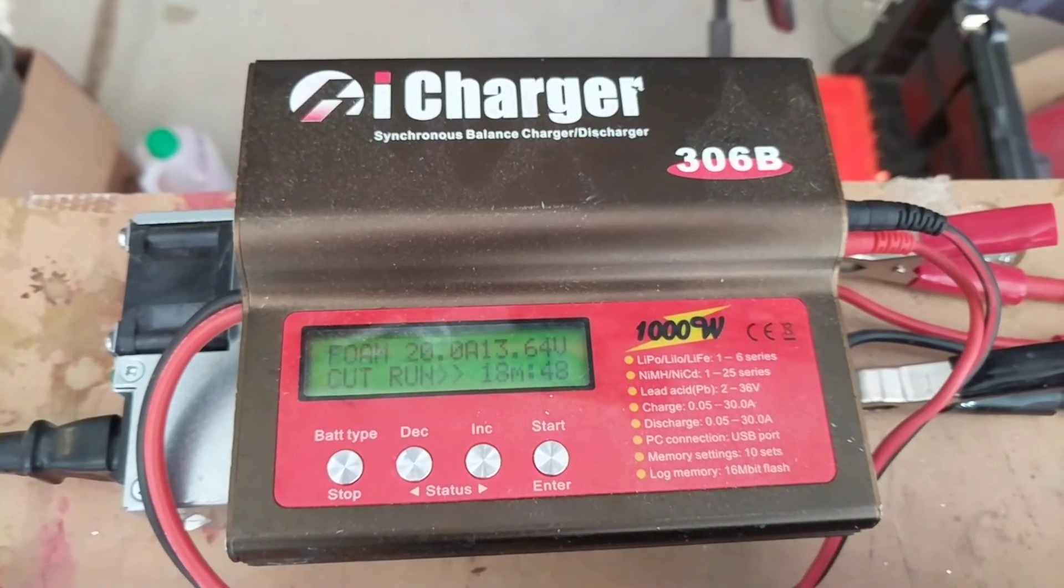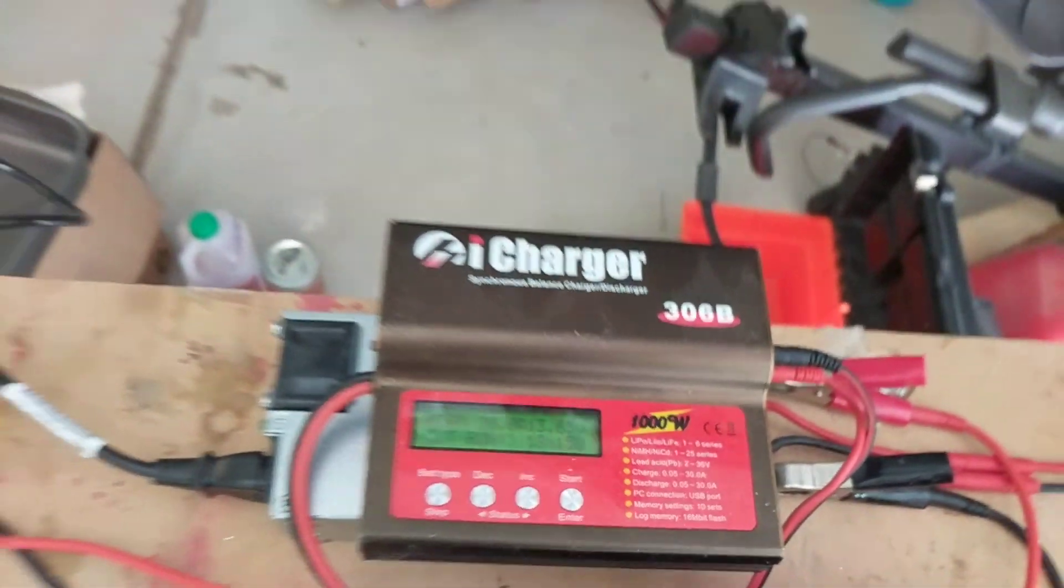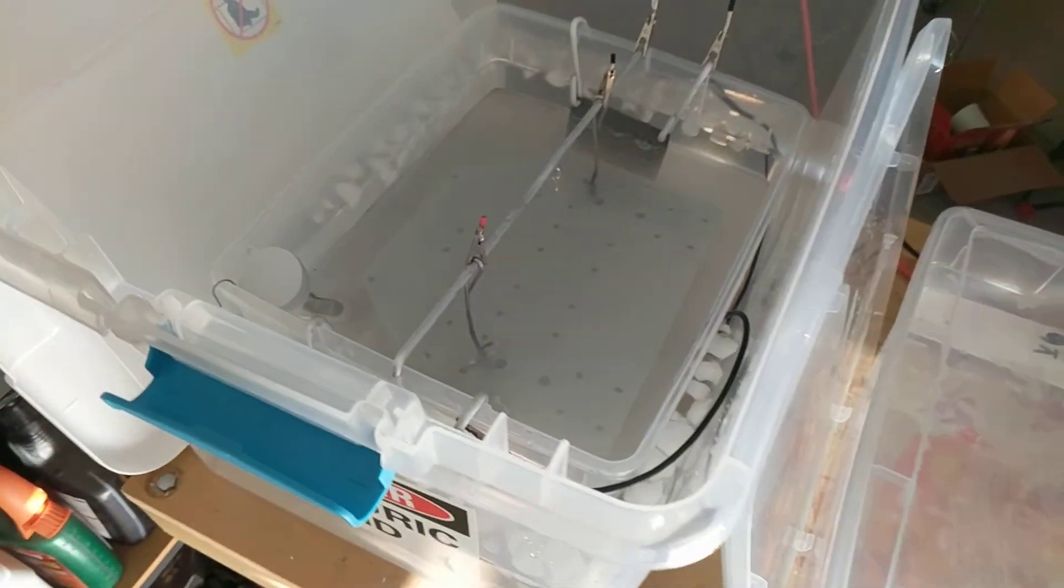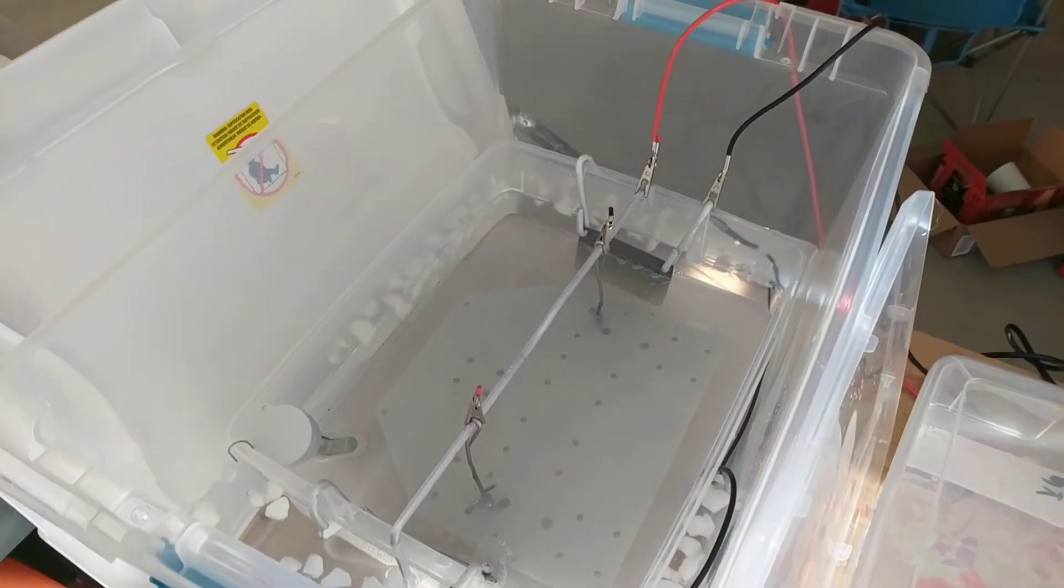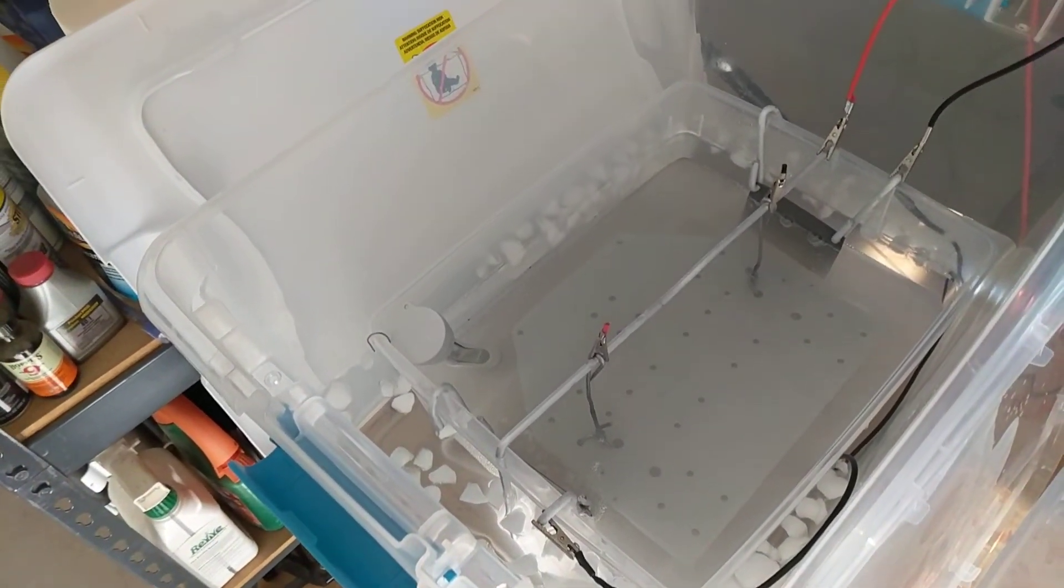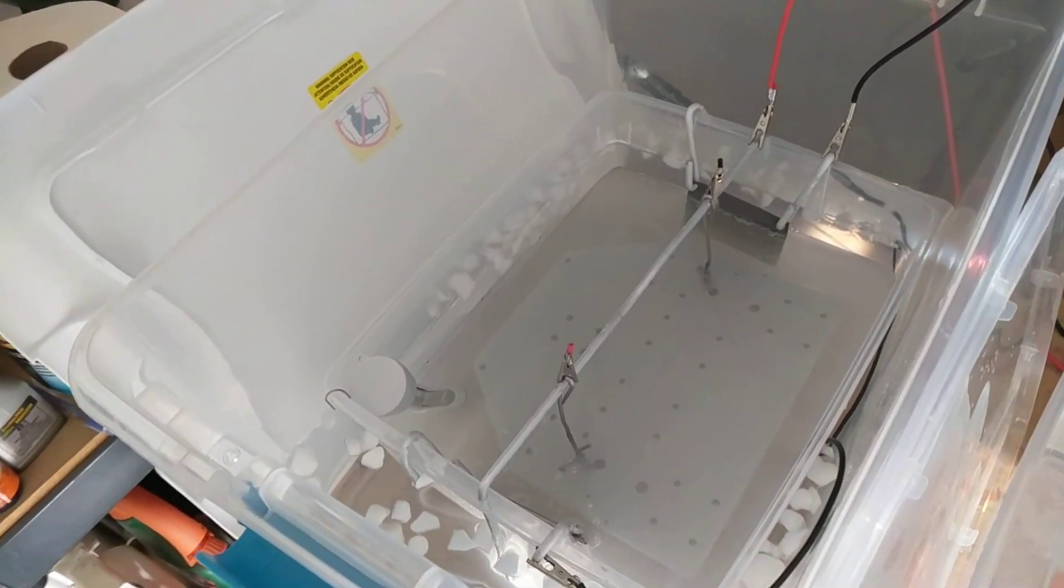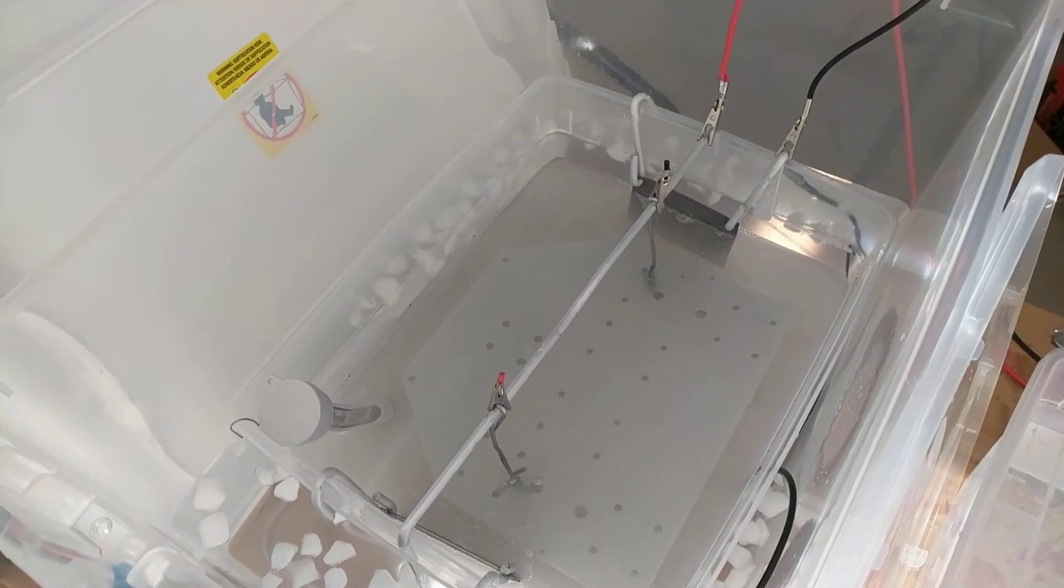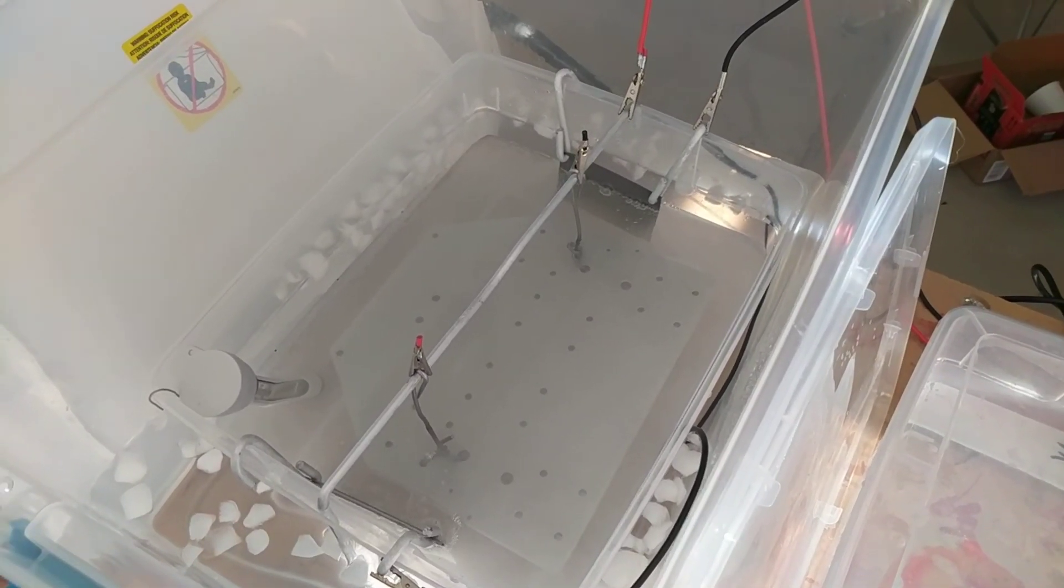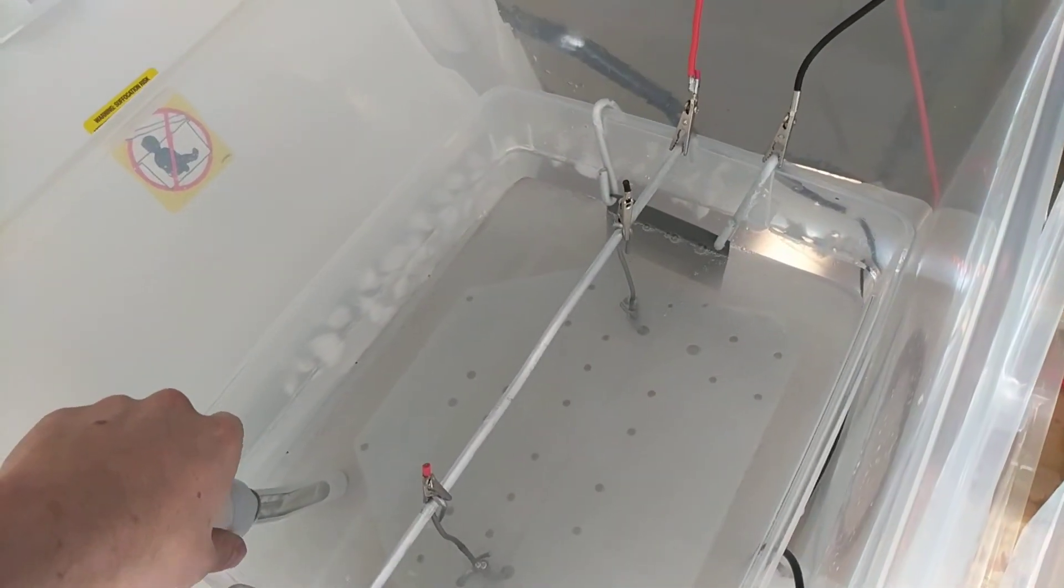That's supposed to be about one mil of anodized thickness. Got the tub in a tub setup here with the outer tub filled with water and ice cubes, because I've had problems with the anodized tank heating up too much, especially at higher current densities.